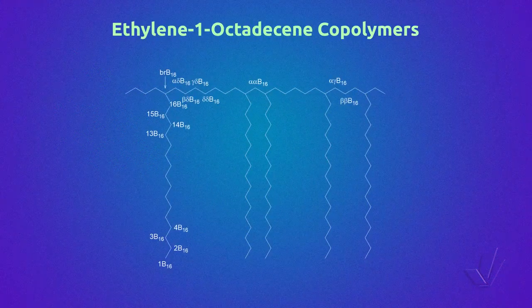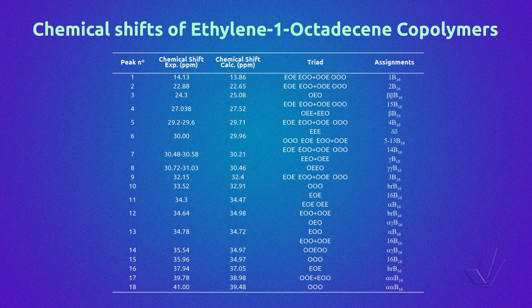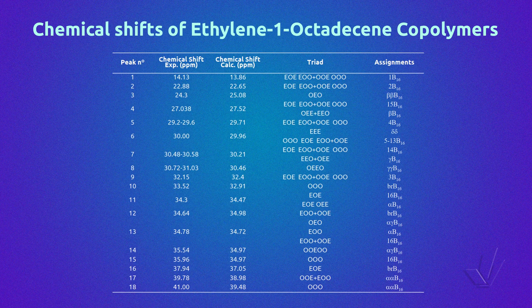Here we can see in this figure the structure of this copolymer and the nomenclature. Here we have obtained a table with all the possible triads of ethylene-1-octadecene copolymers in the same way that we have done before. For more details, you can go back to part 7 of this course. In the same way that we have done before, we will look for peaks that are related to the triads in the table.